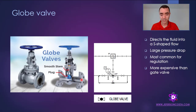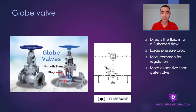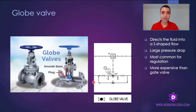After passing through the plug, the fluid continues to the pipe in an S-shaped flow path. Because of that, the globe valve commonly has the highest pressure drop compared to other valves. Something important to mention: unlike the gate valve, which can be installed in any direction, the globe valve must be installed according to the direction of flow. You will find an arrow on the body of the globe valve indicating the correct flow direction, and you should not install it in the opposite direction.